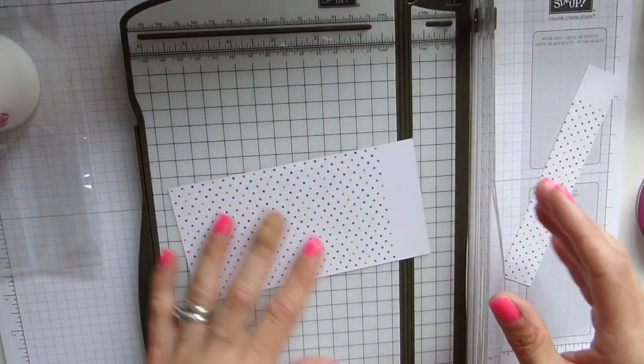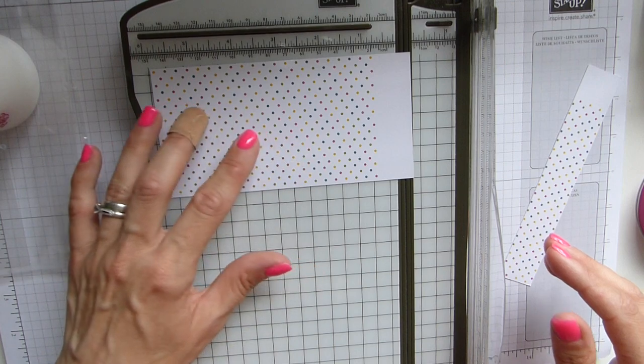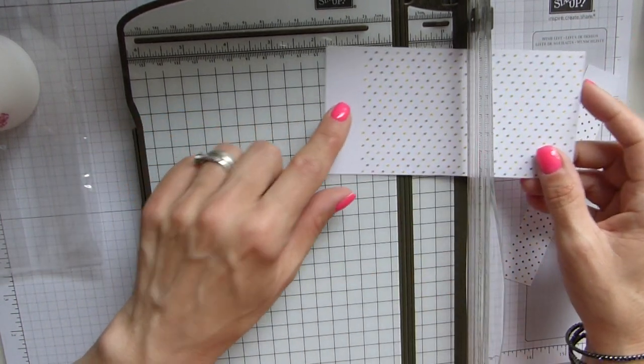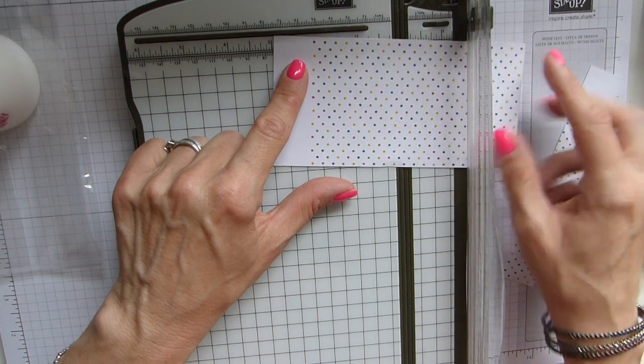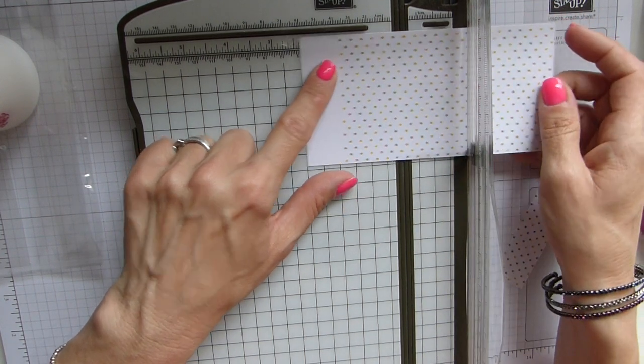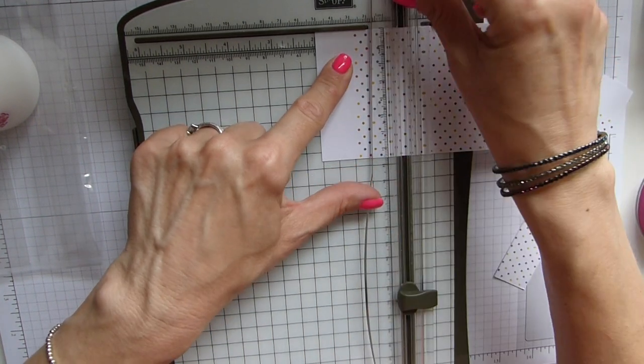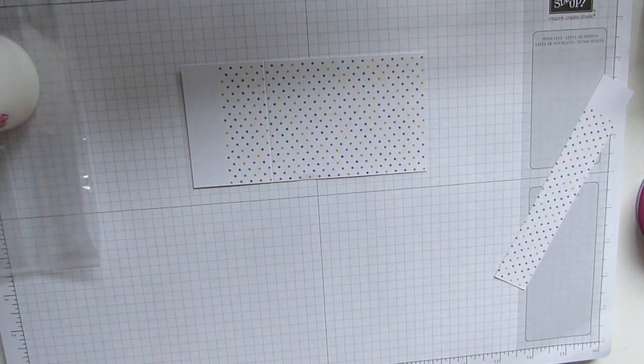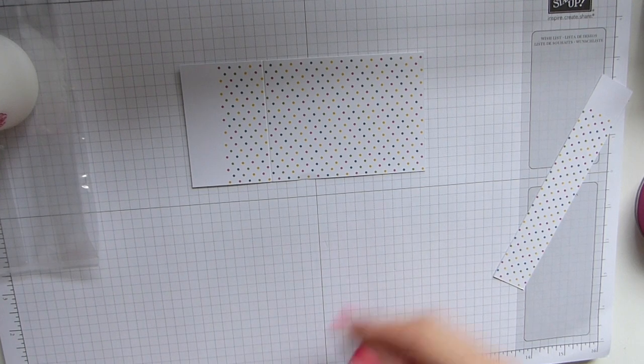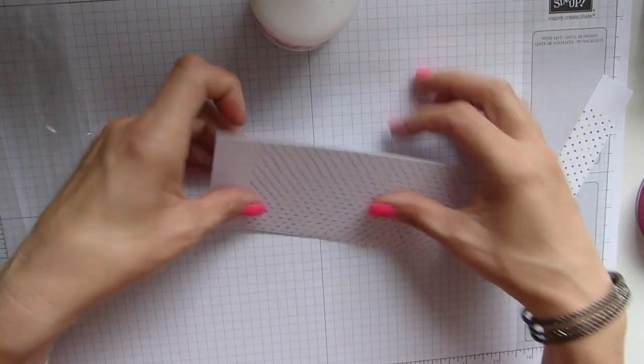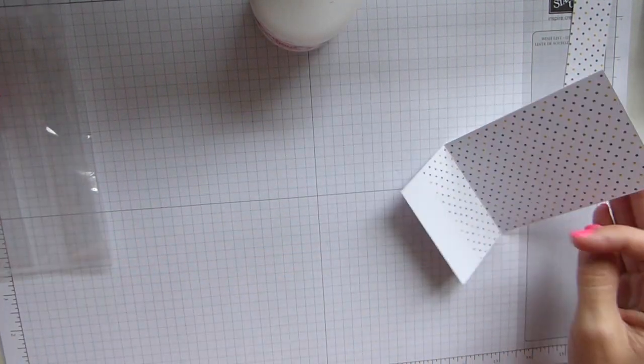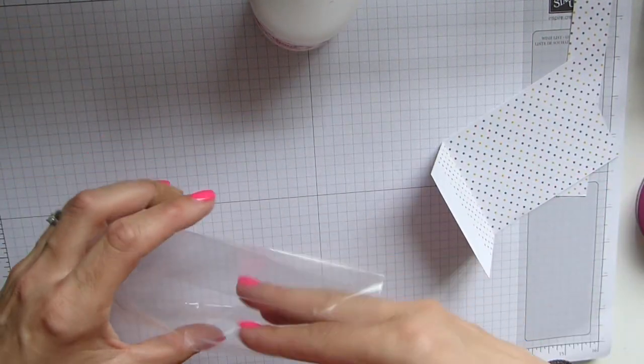Then you need to score it at two inches. You just give that a fold, it doesn't need to be burnished with a bone folder.